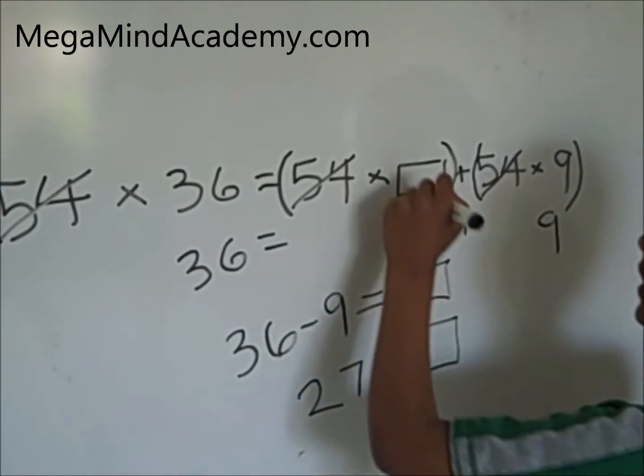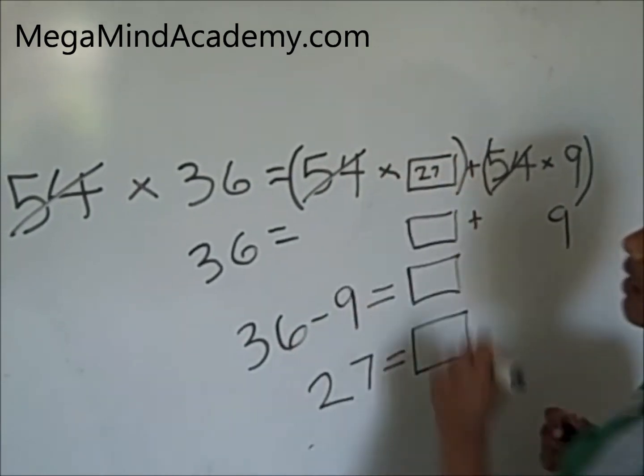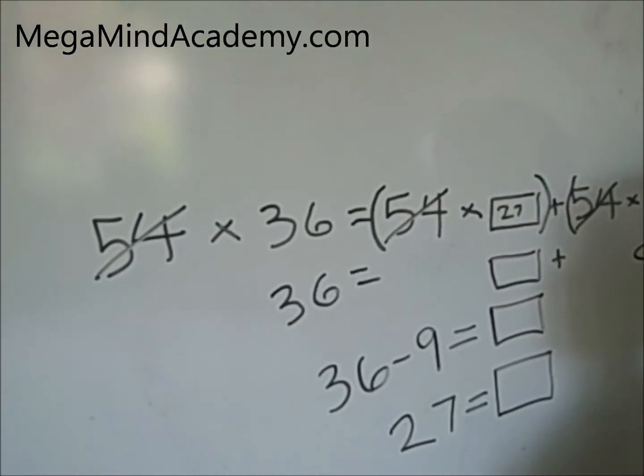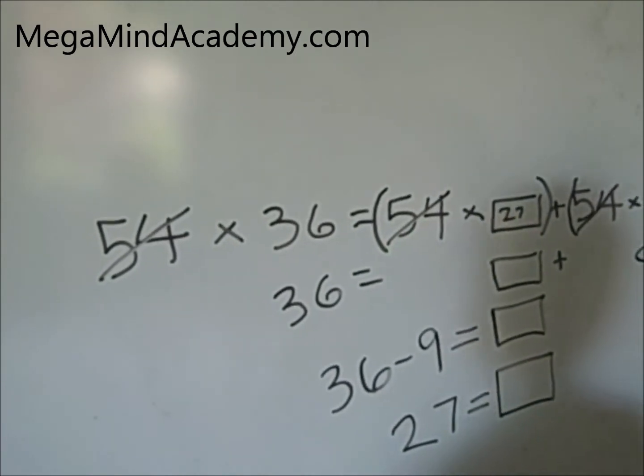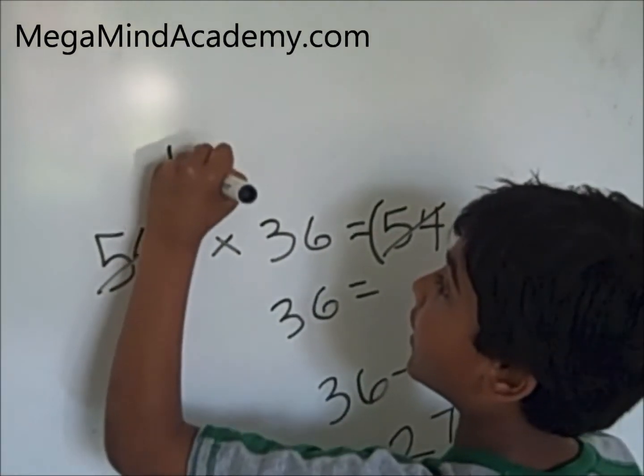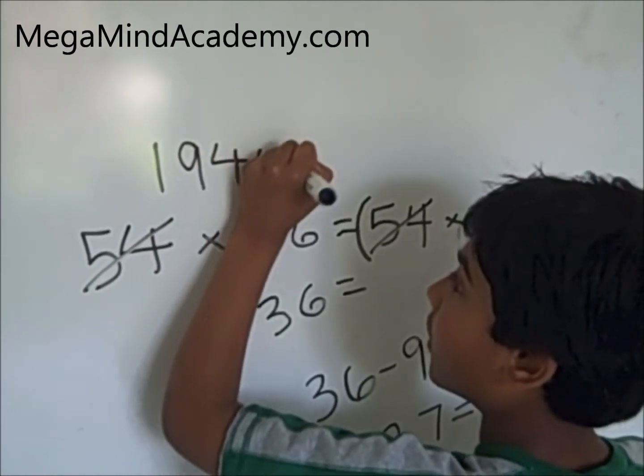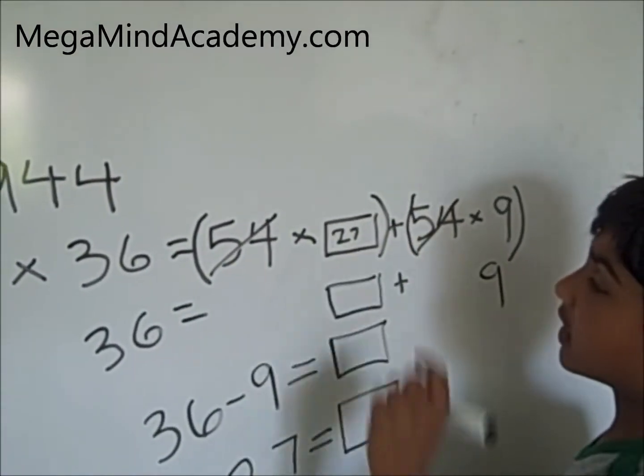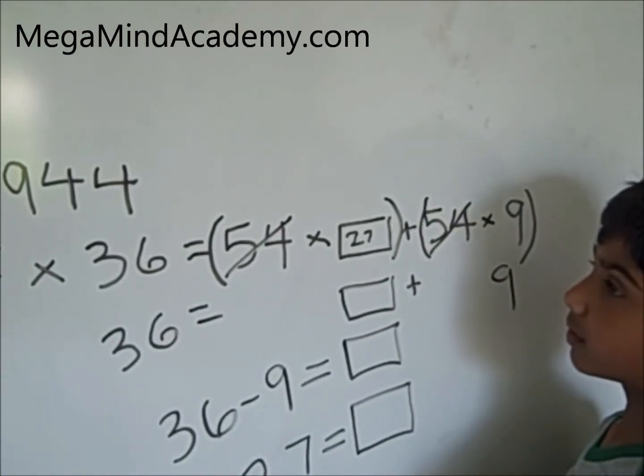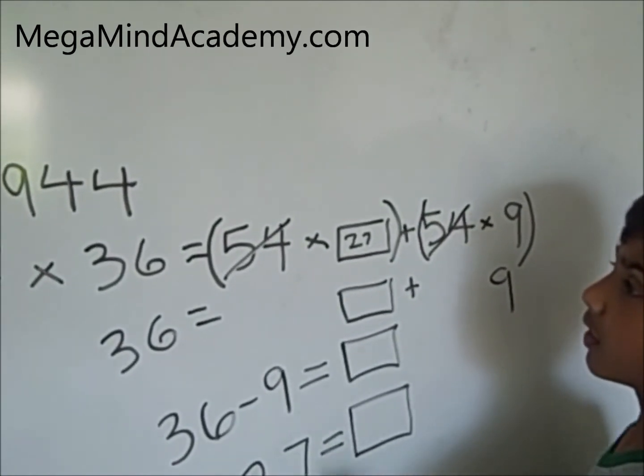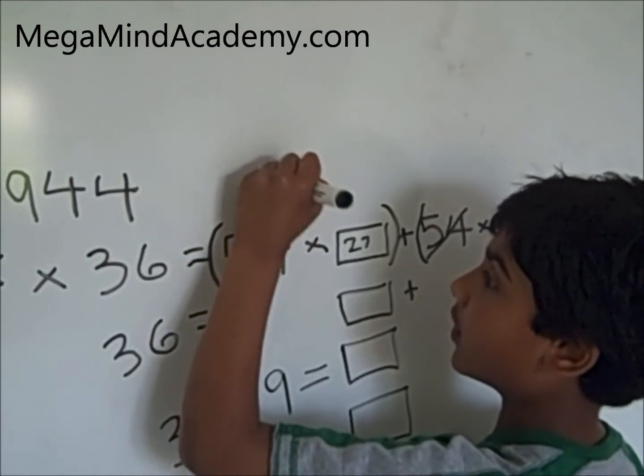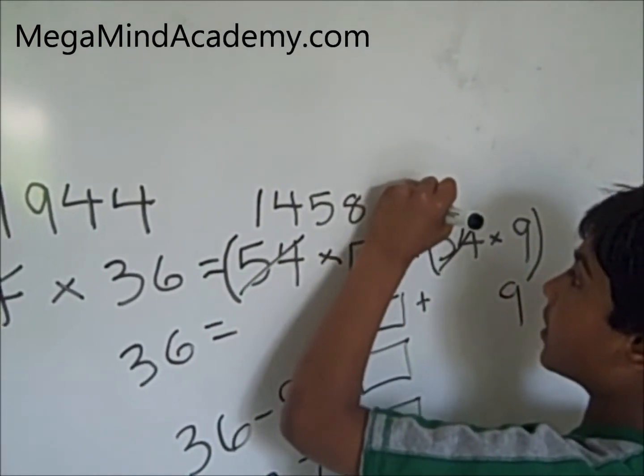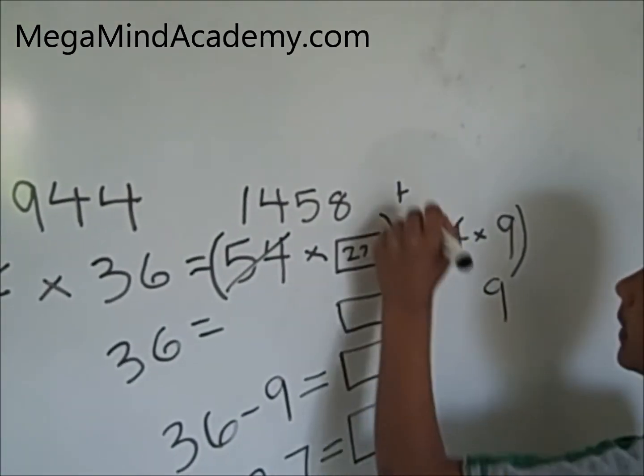Now let's check our answer. 54 times 36 equals 1,944. 54 times 27 equals 1,458. Plus 54 times 9.